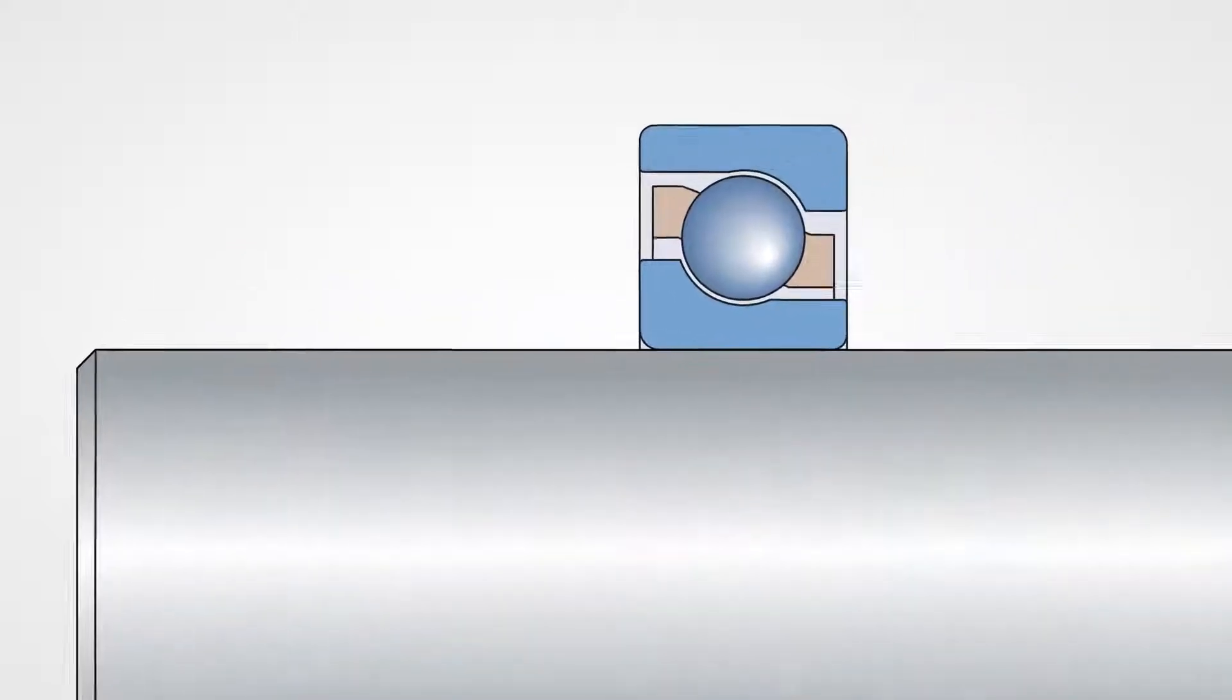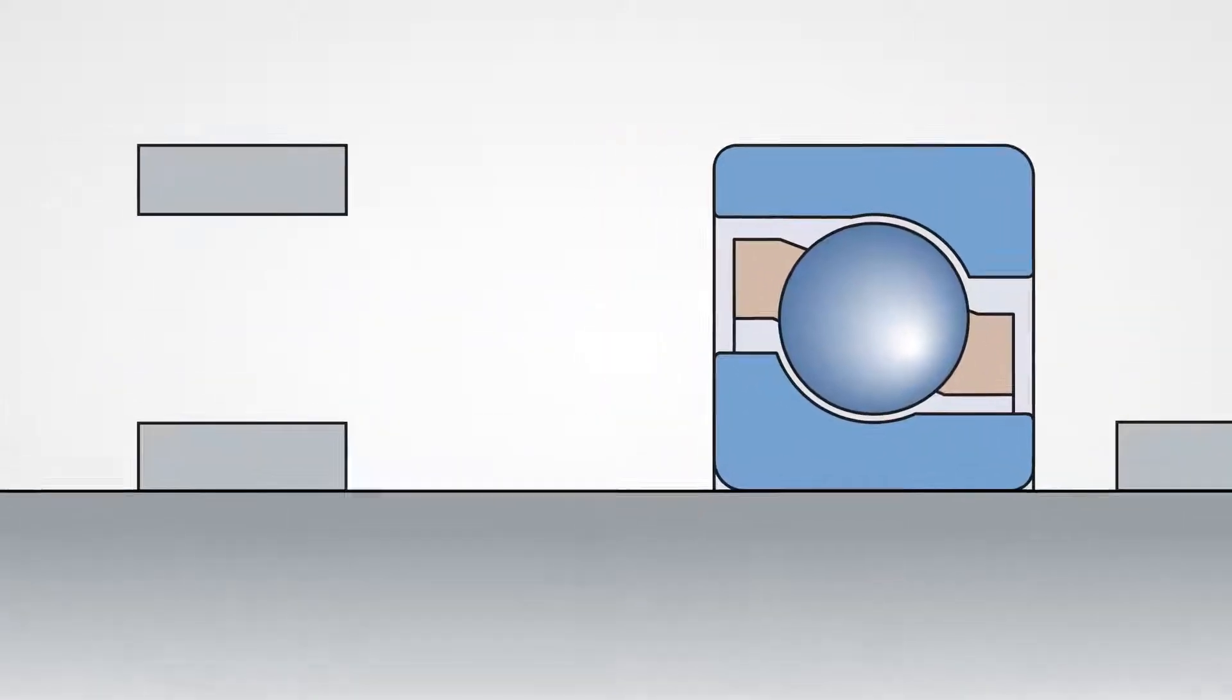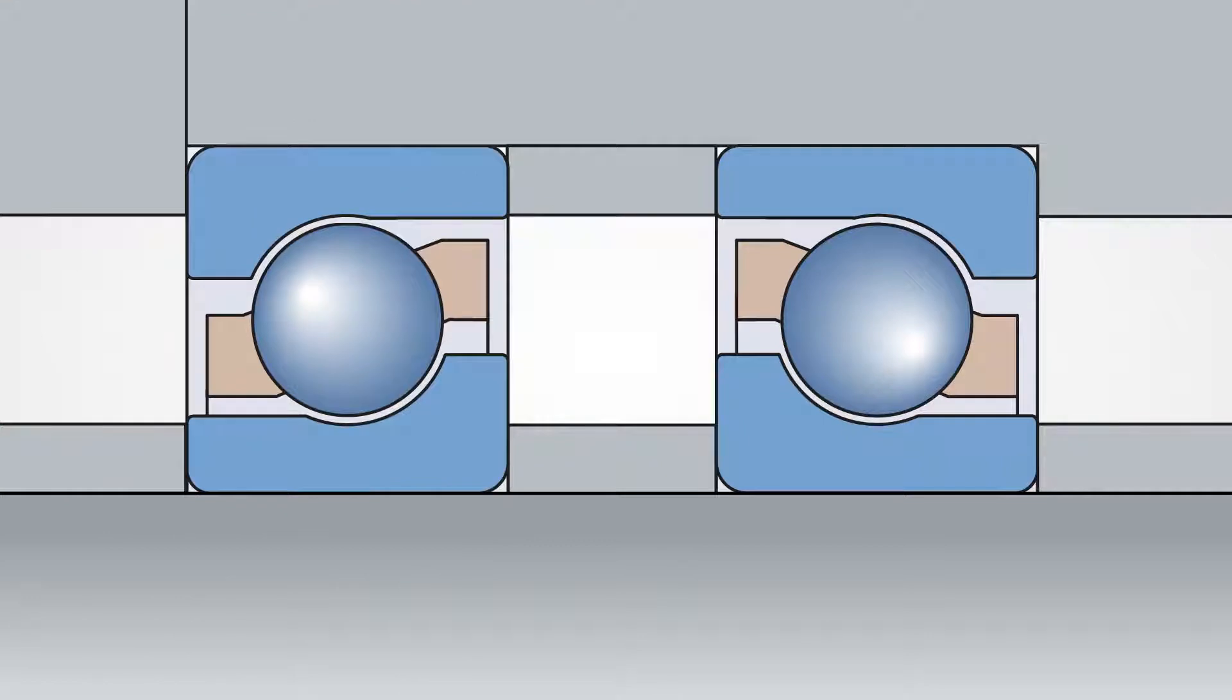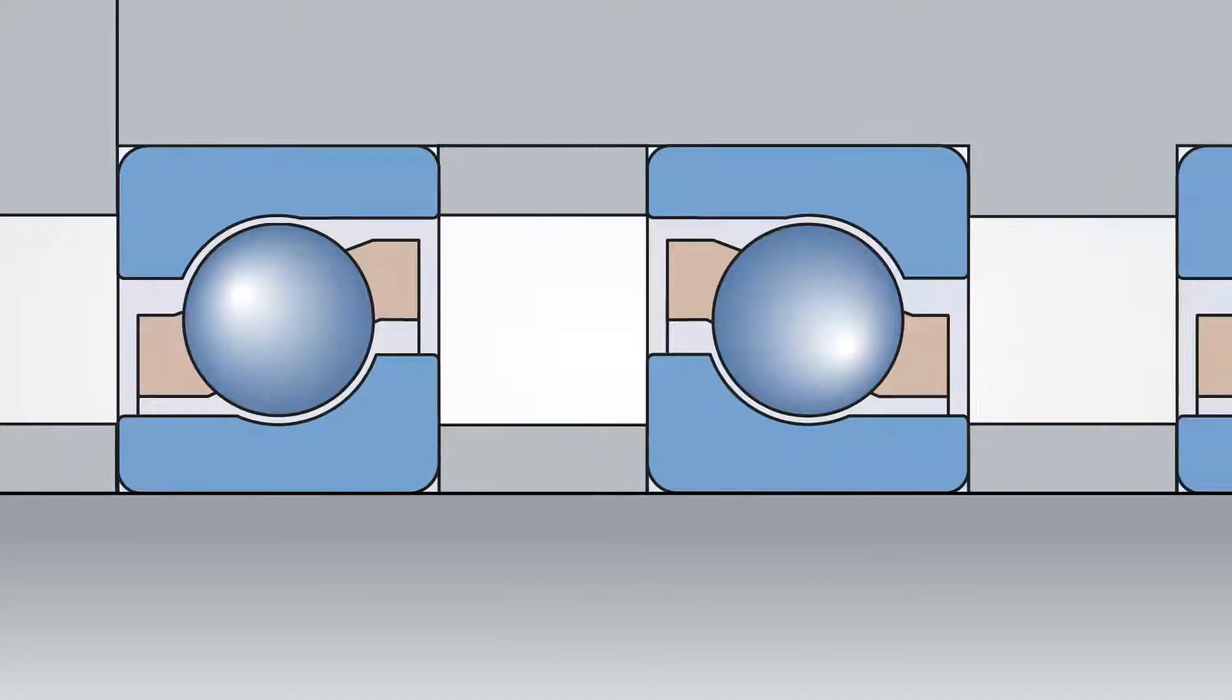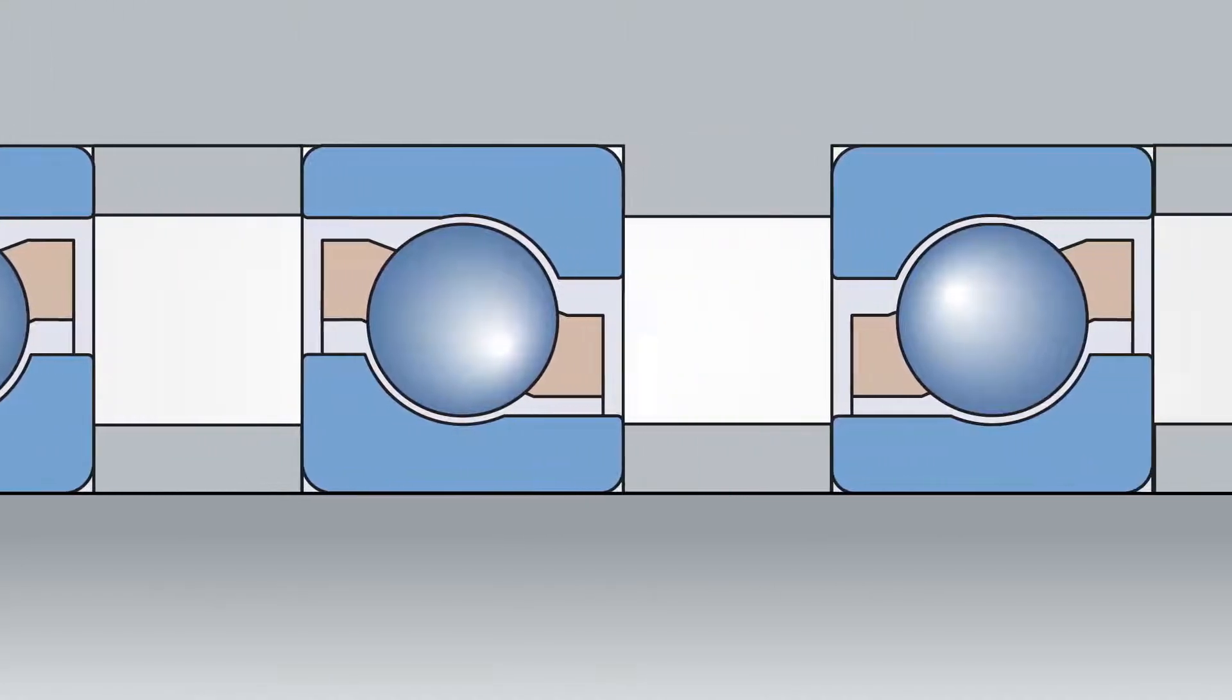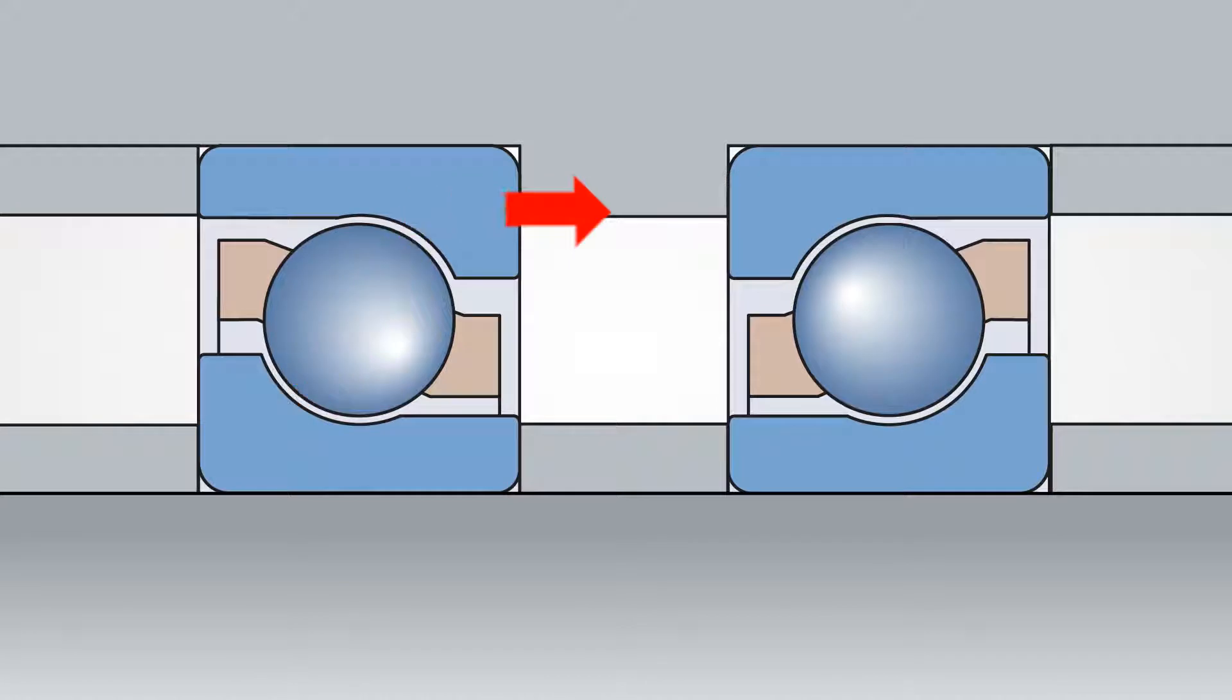Single row angular contact ball bearings can accommodate an axial load acting in one direction and therefore they must always be used in pairs in face-to-face or back-to-back configuration. The resulting setup will accommodate radial and axial loads in either direction.